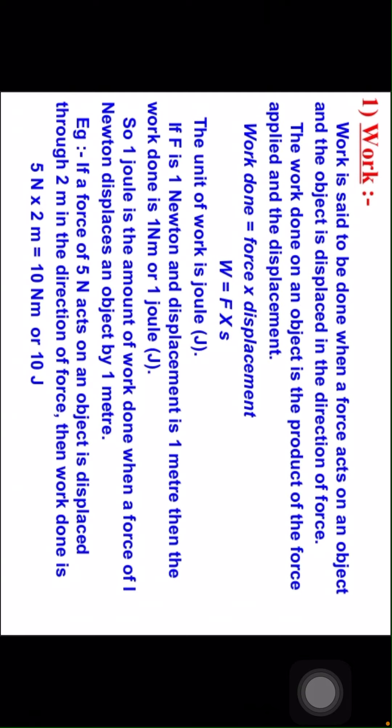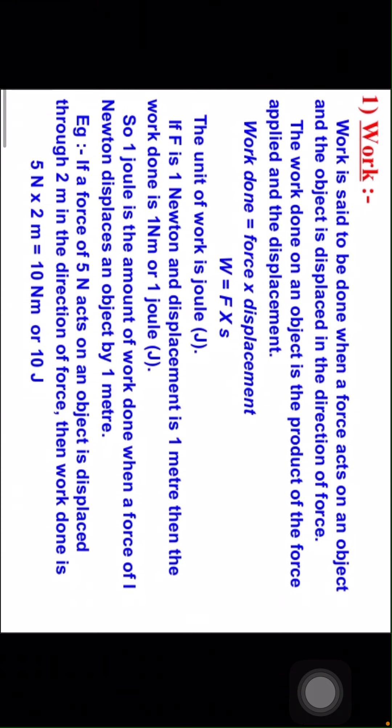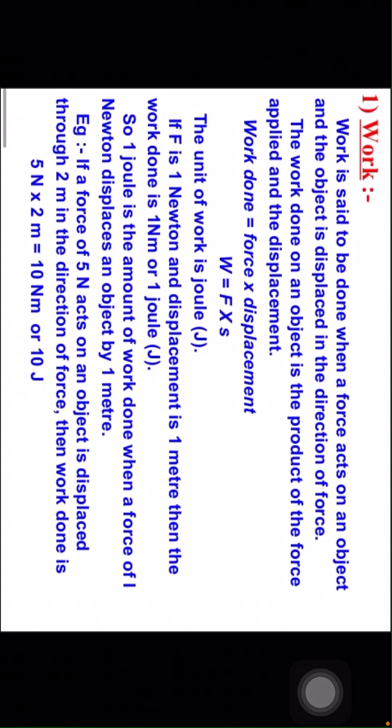If capital F is 1 newton and displacement is 1 meter, then the work done is 1 newton meter or 1 joule. So 1 joule is the amount of work done when a force of 1 newton displaces an object by 1 meter. For example, if a force of 5 newtons acts on an object displaced through 2 meters in the direction of force, then the work done is 5 newtons times 2 meters equal to 10 newton meters or 10 joules.